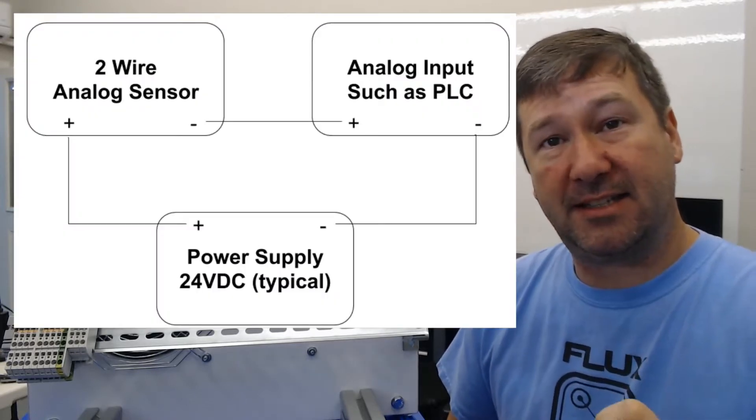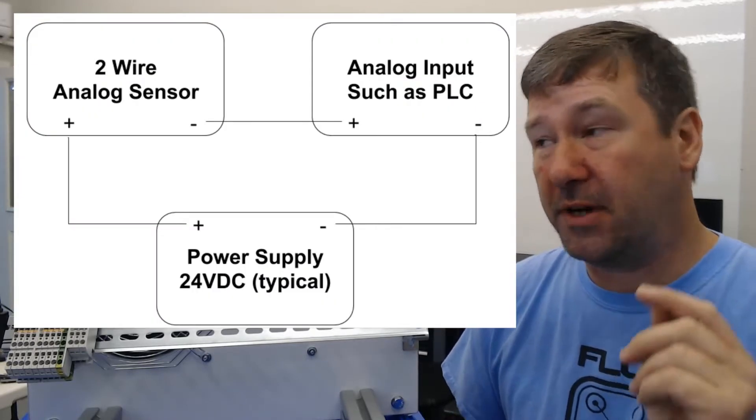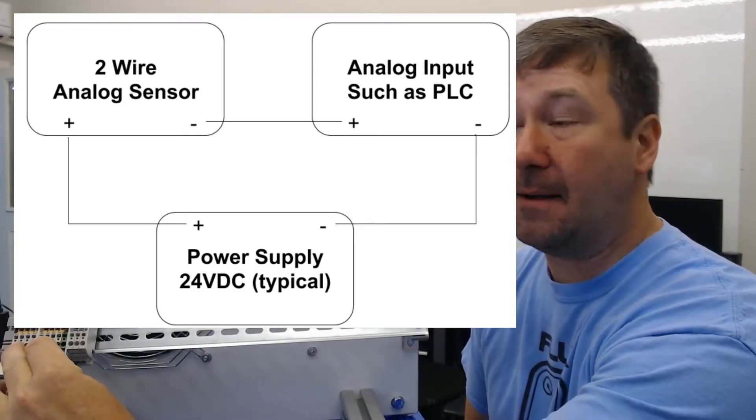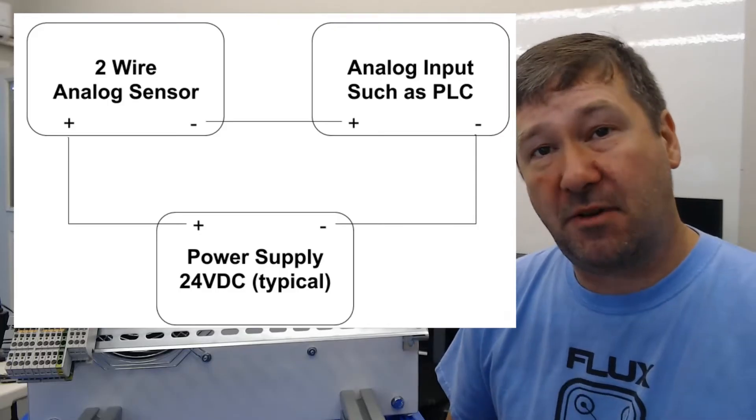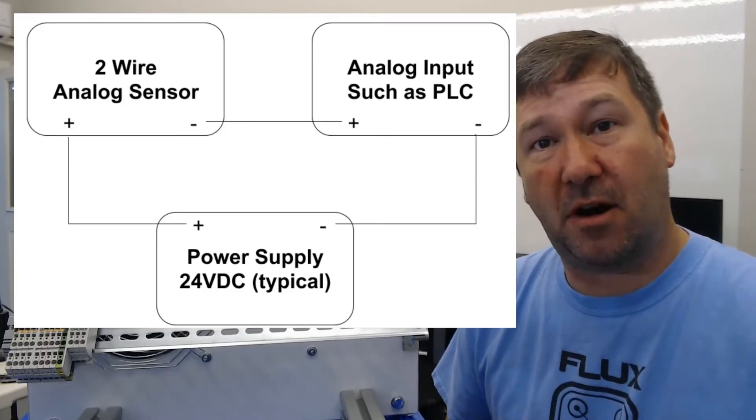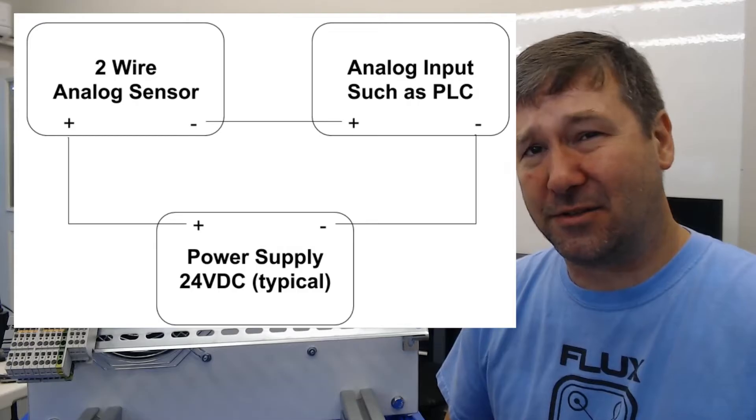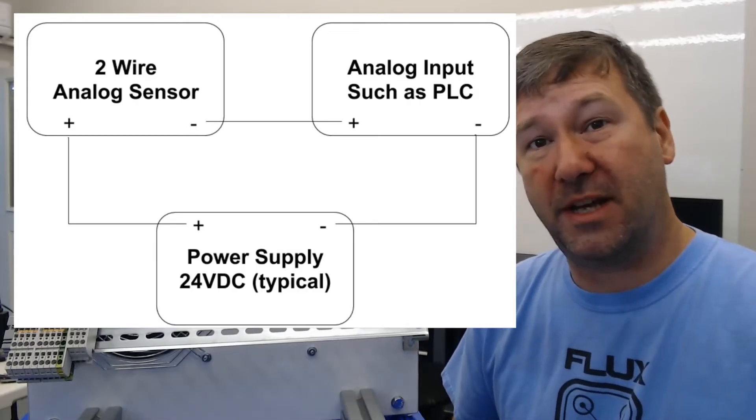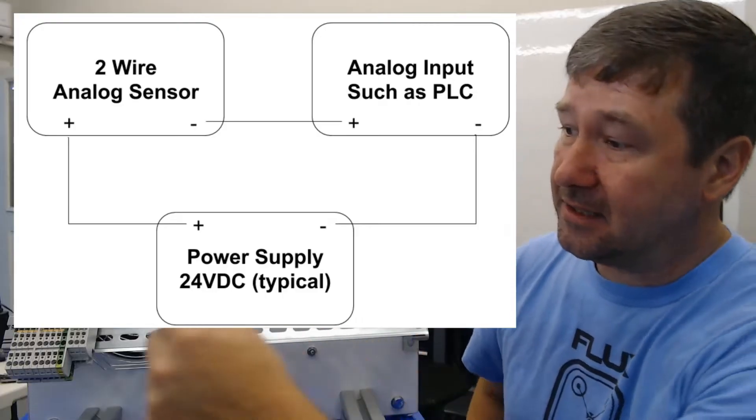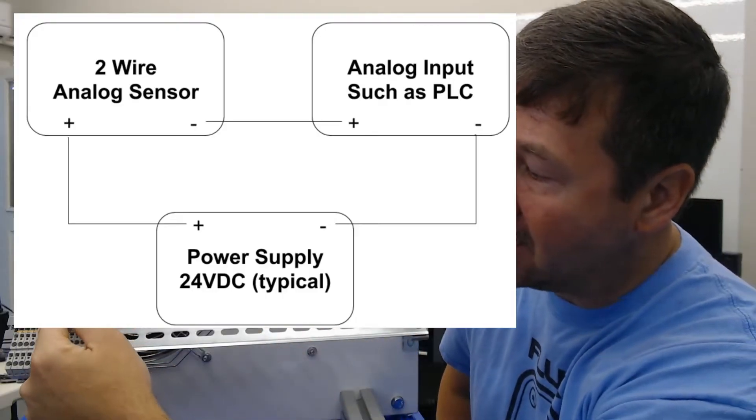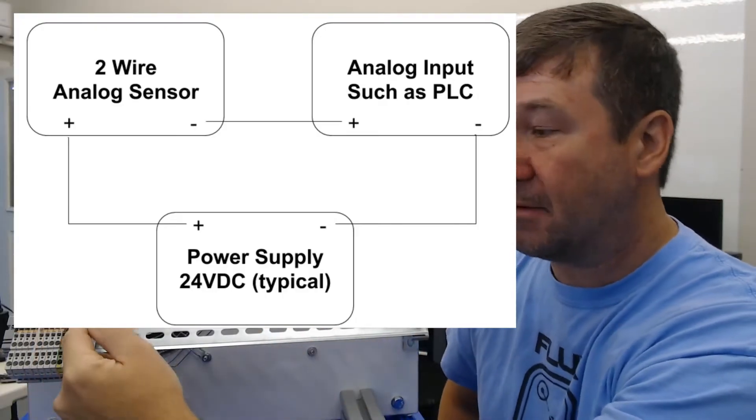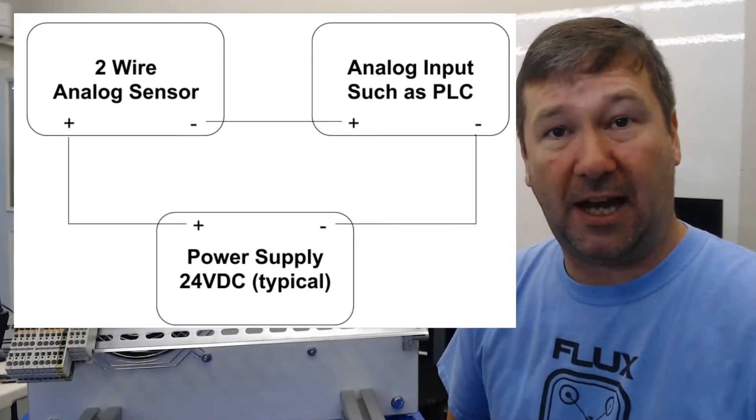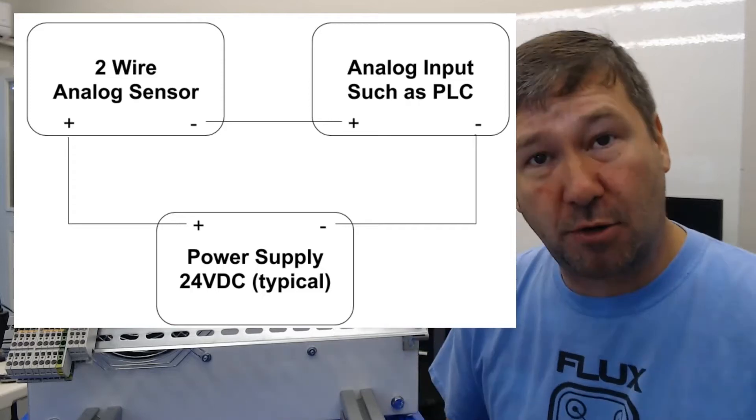This is the circuit for our current 2-wire device. We have a power supply, which in our case is going to be our 24-volt power supply. Then we're going to go from the positive of our power supply to the positive of our instrument. Here's where it gets a little tricky. From there, we're going to go from the negative of our instrument to the positive of our PLC input, or in our case the positive of our meter. Then we're going to go back out of the negative of our meter to the negative of the power supply, and that will make our current loop.